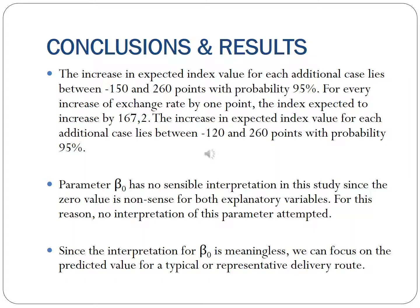Parameter beta 0 has no sensible interpretation in this study since the zero value is nonsense for both explanatory variables. For this reason, no interpretation of this parameter is attempted. We only observed that zero value lies at the left tail of the posterior distribution within the range of the 95% posterior interval. Since the interpretation for beta 0 is meaningless, we can focus on the predicted value for a typical or representative delivery route. According to the posterior summaries, a typical index point will take 66,840 on average and will range from 54,620 to 74,380 with probability 95%.